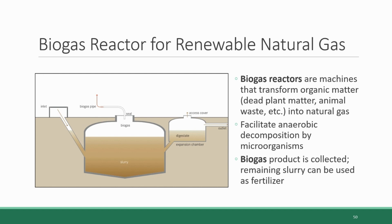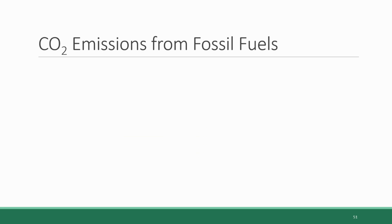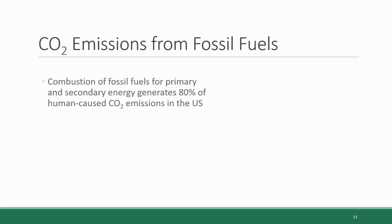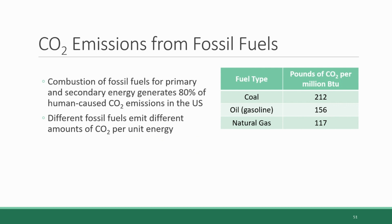This brings us to the end of our discussion about natural gas. Together, the combustion of the three types of fossil fuels for primary and secondary energy generates 80% of human-caused emissions in the US. There are other non-energy-related sources of CO2 emissions — for example, livestock — but these are relatively small compared to emissions tied to energy production. Importantly, the three fossil fuels are not equal in terms of CO2 emissions per unit of energy. This table shows the pounds of CO2 released per million BTUs — a British thermal unit being the amount of heat required to raise the temperature of one pound of water by one degree Fahrenheit.